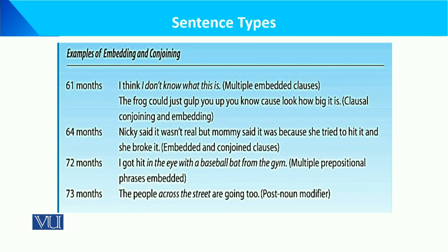Now, looking at the sentence types of embedding and conjoining by age — we have seen examples in this table. At 61 months, there are multiple embedded clauses. For example: 'The frog could just gulp you up to know, because look how big it is.' So this shows clausal conjoining and embedding together — these are two examples.